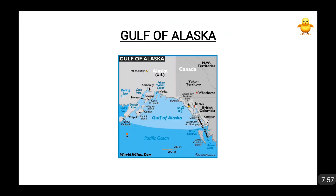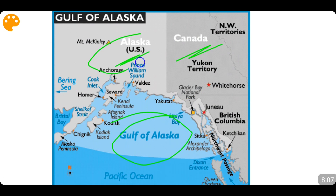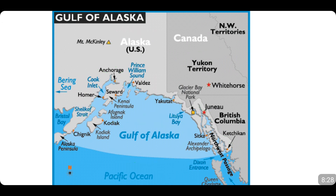Moving forward, we come to the Gulf of Alaska. This is Alaska — a part of the US — and this is Canada. The Gulf of Alaska is shared by both the US and Canada. It is a part of the Pacific Ocean. The entire boundary of the Gulf of Alaska contains mountains, forests, and glaciers.